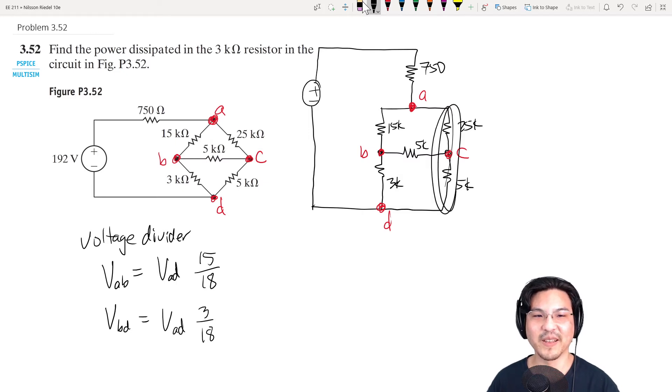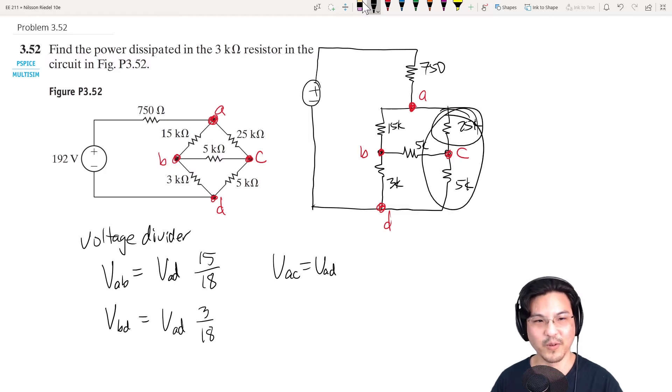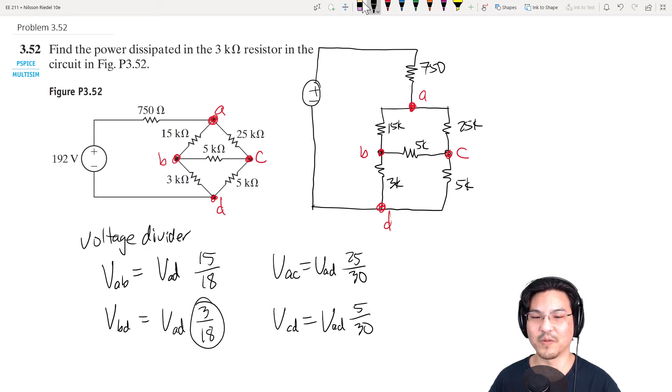Now how about this side? The voltage from A to D is the same. But the voltage from A to C is A to D times 25 over 25 plus 5. The voltage from C to D is A to D times 5 over 25 plus 5. This is 1 over 6, this is 5 over 6. In other words, the voltage here is the same as the voltage here.